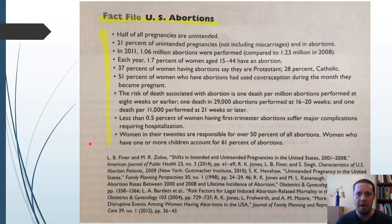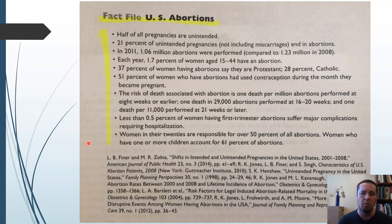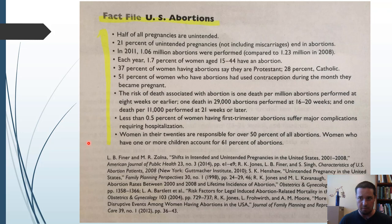Here are some quick facts on US abortions. Half of all pregnancies are unintended. 21% of unintended pregnancies end in abortion, not including miscarriages. In 2011, about a million abortions were performed. Each year, 1.7% of women between 15 and 44 have an abortion. 51% of women who have abortions had used contraception during the month they became pregnant — so about half of women who have abortions actually use contraception. The risk of death is one per million abortions performed at eight weeks or earlier, and less than 0.5% of women having first trimester abortions suffer major complications, so abortions are pretty safe if performed in the first trimester.